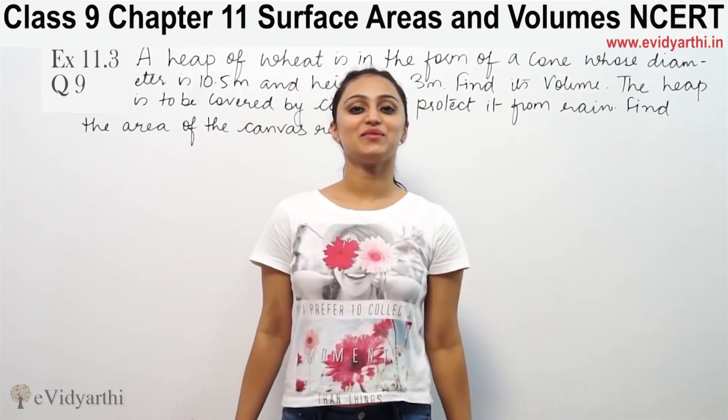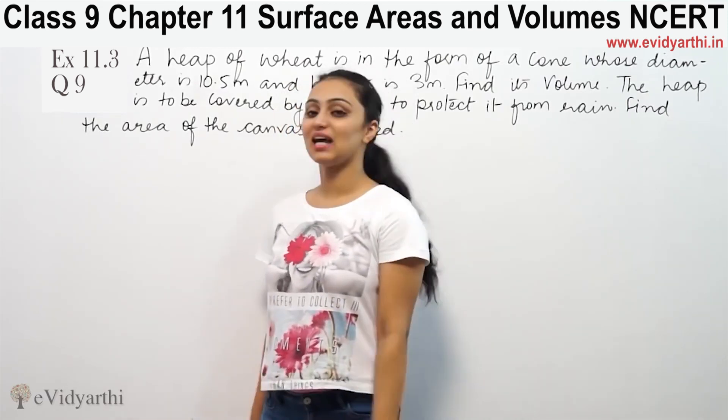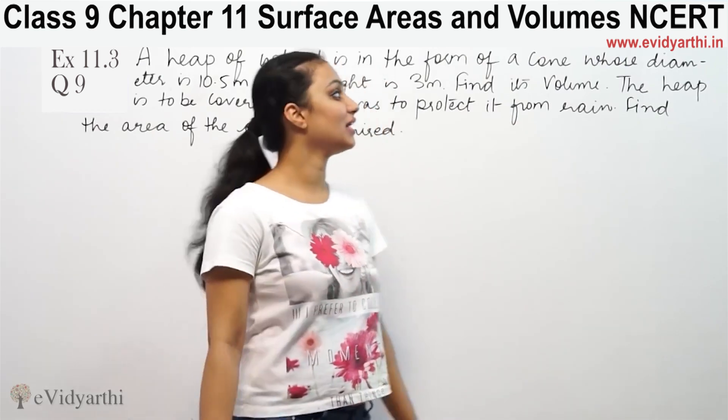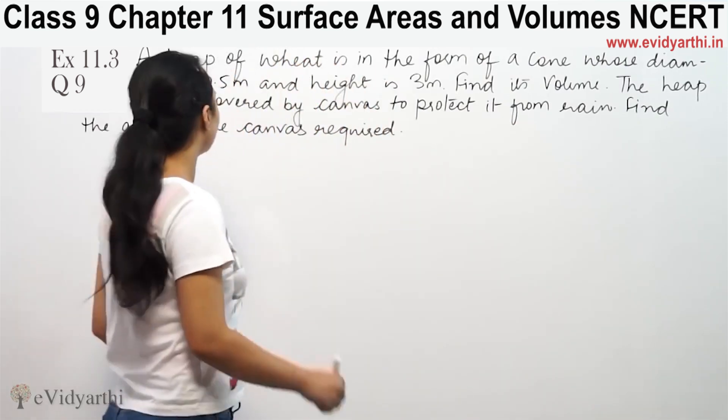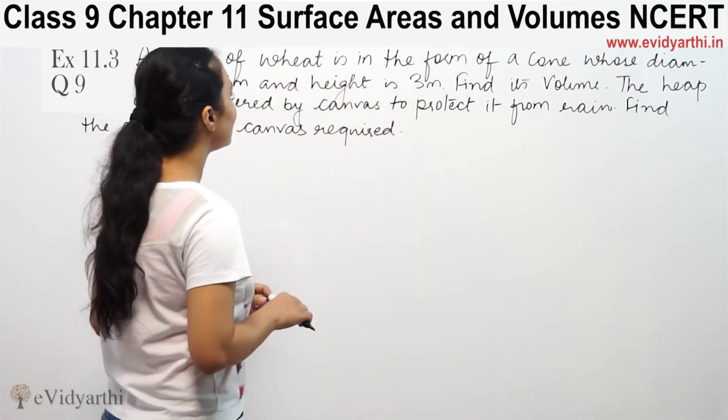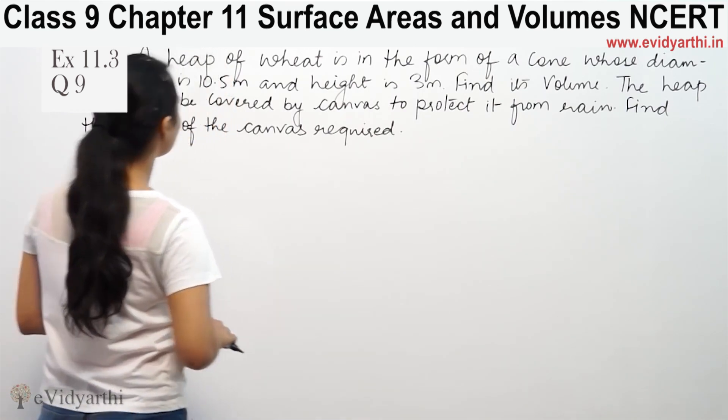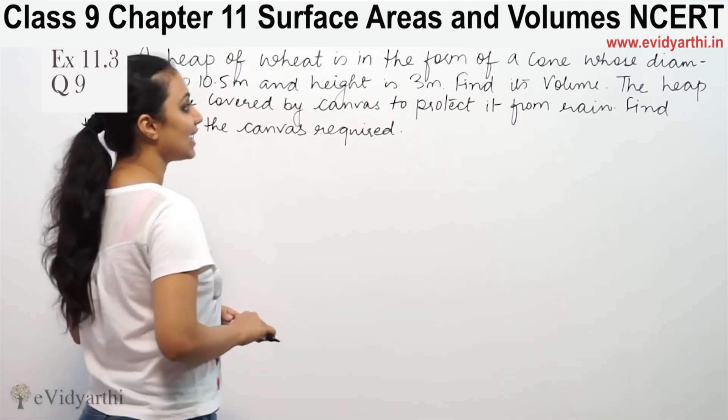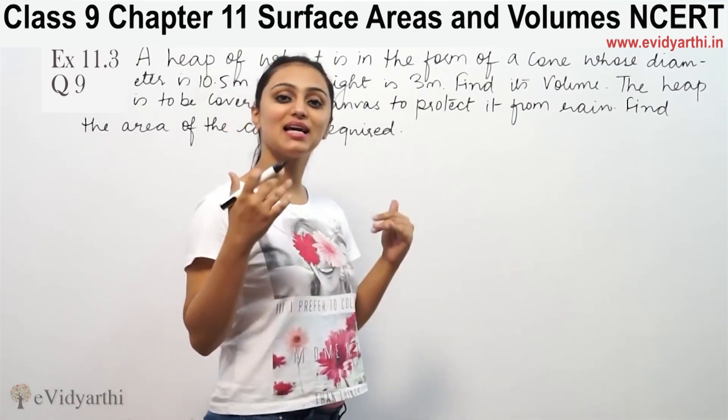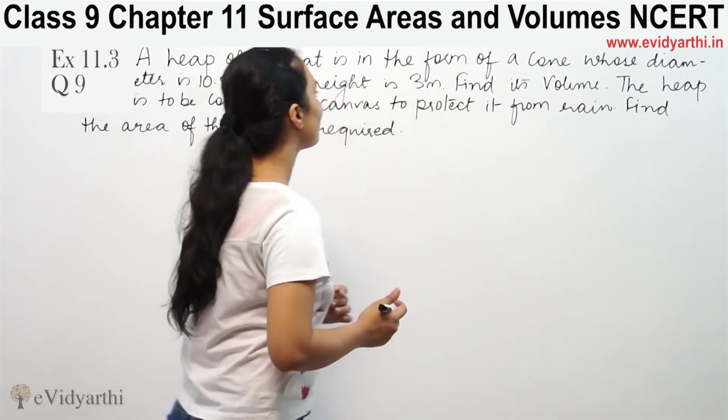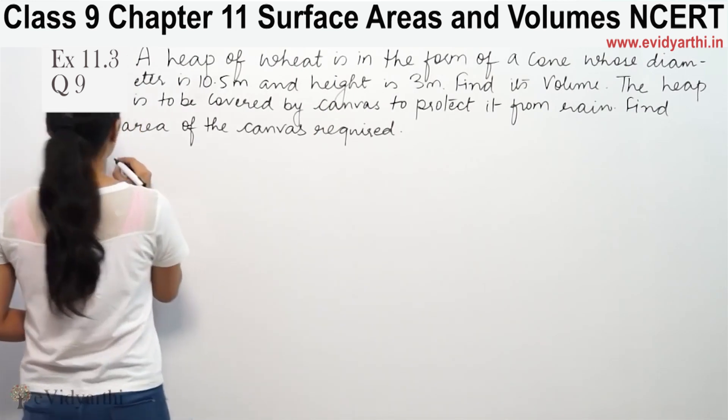Hi, this is Khusboo with another question on surface areas and volumes. This is question 9 from exercise 13.7, page 233 from NCERT. A heap of wheat is in the form of a cone whose diameter is 10.5 meters and height is 3 meters. Find its volume.